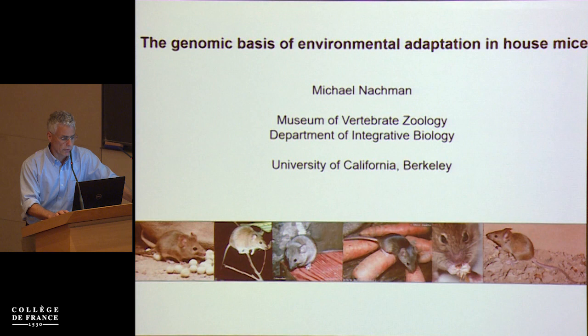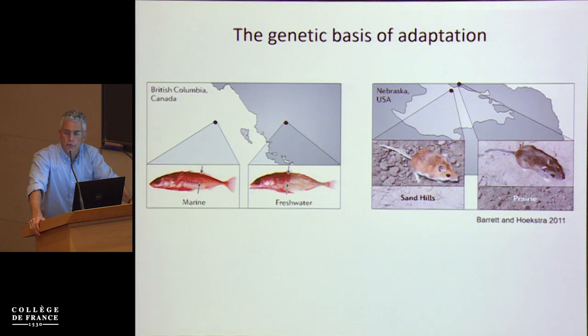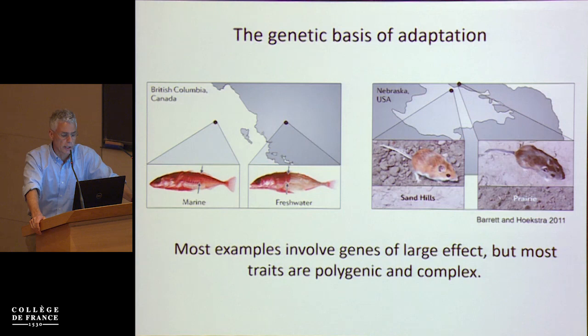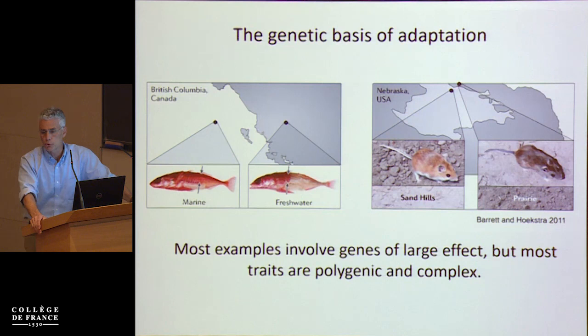This is work we've done on environmental adaptation of house mice. We know a lot about the genetic basis of adaptation from well-studied examples like sticklebacks and color variation in mice, but many of the best examples of the genetic basis of adaptive traits come from traits that are either Mendelian or oligogenic. But of course most traits are probably polygenic and complex, and that's probably true for most adaptive traits as well — and we know much less about this.